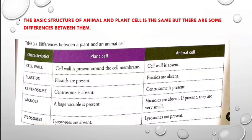Lysosomes are the organelles which help in digestion inside the cell. Lysosomes are absent in the plant cell but they are present in the animal cell. So these are the differences between plant and animal cell.